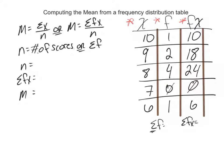Now again, this sum right here just means add them up. So sum of f is 1 plus 2 plus 4 plus 1, so sum of f is 8.